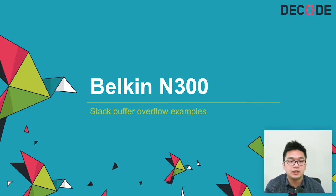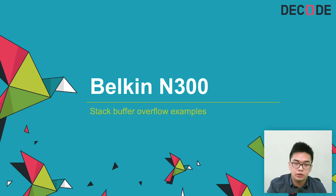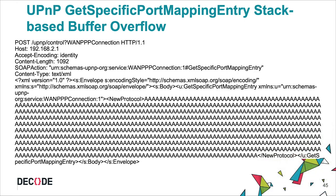Let's look at some vulnerabilities in these routers. The first is a stack buffer overflow in the Belkin Surf N300. This is the proof-of-concept that triggers the vulnerability. This vulnerability exists in the UPnP service, which is SOAP protocol-based. Within the SOAP envelope, the GetSpecificPortMappingEntry action's NewProtocol property contains a stack buffer overflow vulnerability.